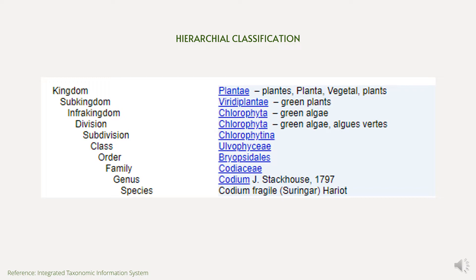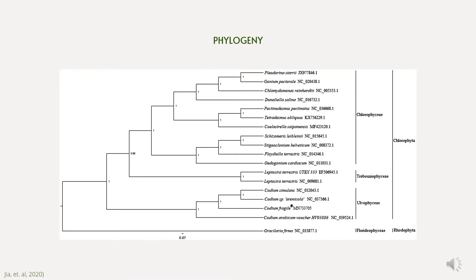Moreover, it has subspecies such as C. fragile atlanticum, C. fragile tomentosoides, and C. fragile scandinavicum. According to a study by a group of researchers led by Gea in 2020, these species form a close relationship and share a sister clade with C. simulans, C. sp. arenicola, and class Ulvophyceae.